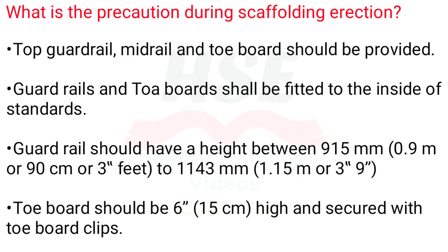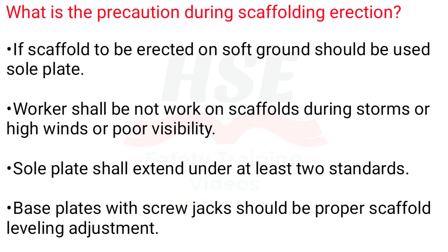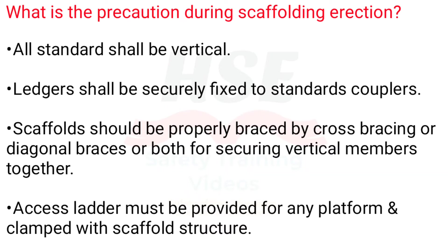Guard rail should have a height between 915 mm to 1,143 mm. Toe board should be 6 inches high and secured with toe board clips. If scaffold is to be erected on soft ground, a sole plate should be used. Workers shall not work on scaffolds during storms, high winds, or poor visibility. Sole plate shall extend under at least two standards. Base plates with screw jacks should allow proper scaffold leveling adjustment. All standards shall be vertical. Ledgers shall be securely fixed to standards with couplers. Scaffolds should be properly braced by cross bracing or diagonal braces, or both, for securing vertical members together.